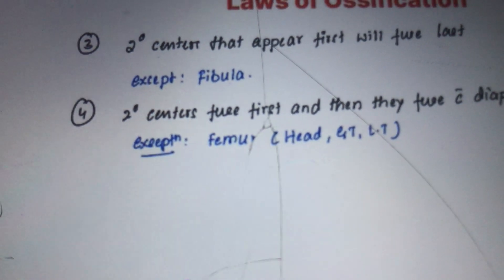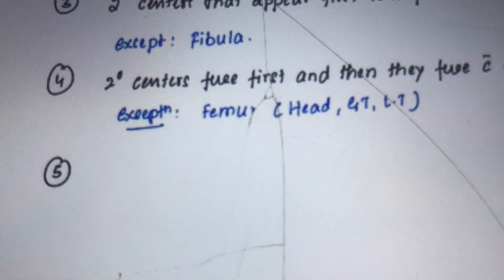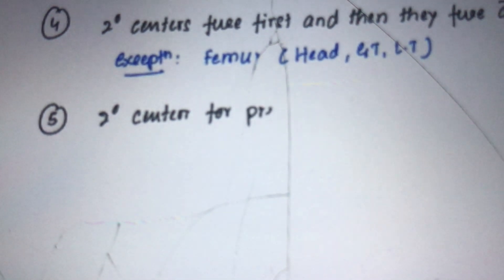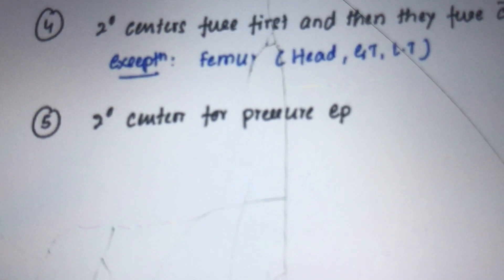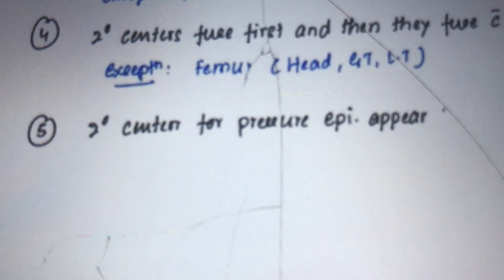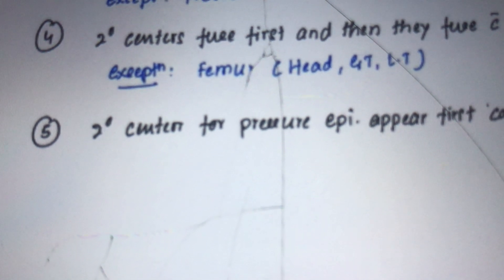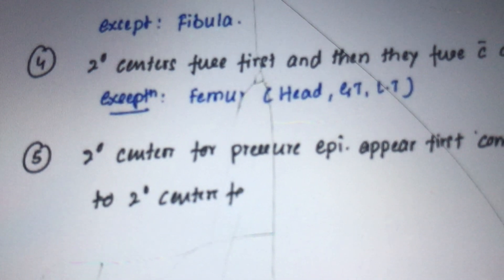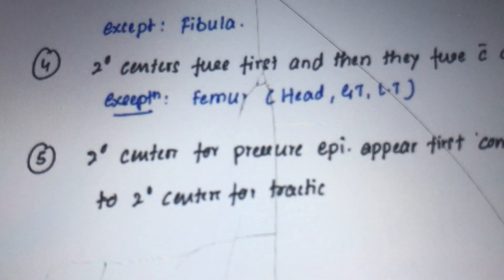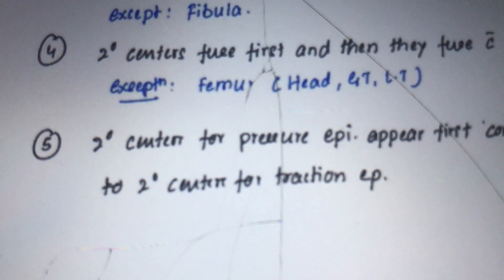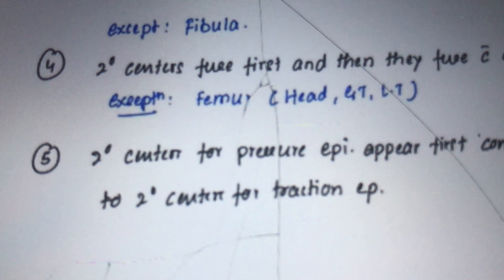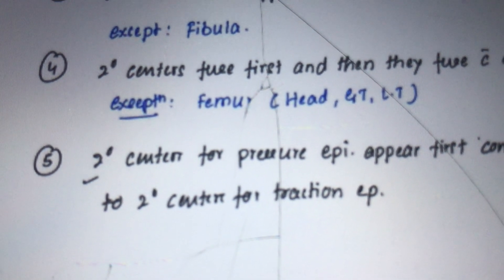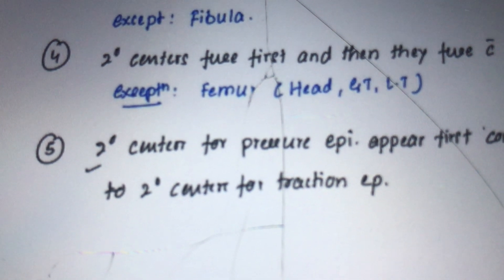The fifth law states that secondary centers for pressure epiphysis appear first compared to secondary centers for traction epiphysis. A pressure epiphysis is one that forms a joint, while a traction epiphysis is produced by the pull of a muscle.